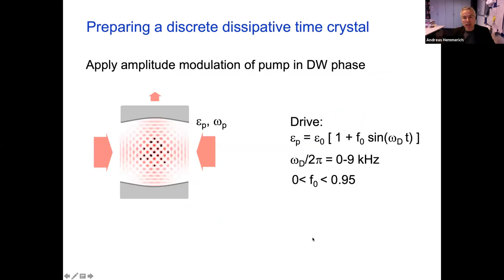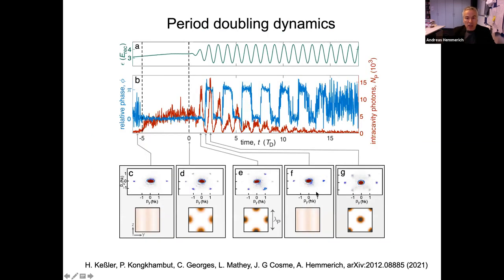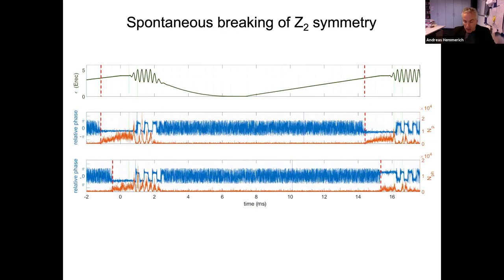So now how to prepare a discrete time crystal, a discrete dissipative time crystal actually. Well, we apply amplitude modulation of the pump in the density wave phase. So the drive is modulated in this fashion. There's two parameters, the modulation index at naught, and the frequency, omega D, which is in the range of a couple of kilohertz.